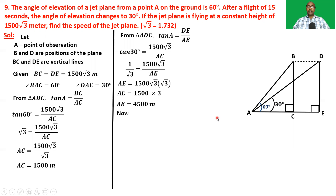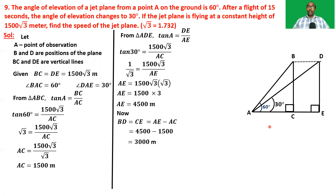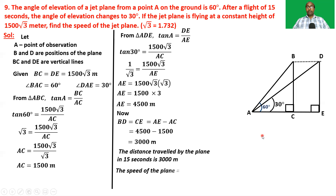Now the distance BD, which equals CE, is AE minus AC. CE is the distance traveled by the plane in 15 seconds. So it equals 4500 minus 1500, which is 3000 meters. Therefore the speed of the plane is distance by time, that is 3000 meters by 15 seconds, which equals 200 meters per second.